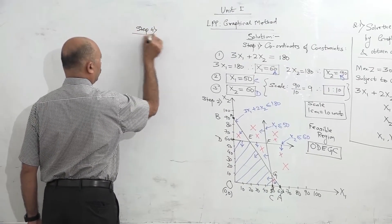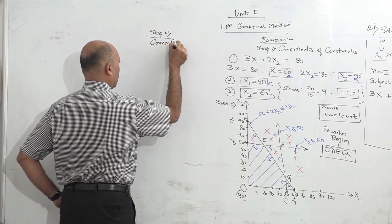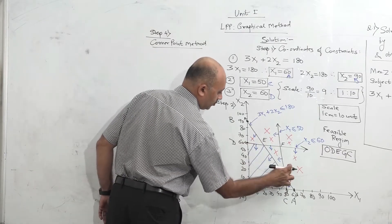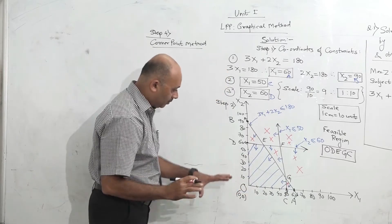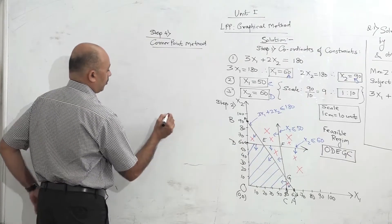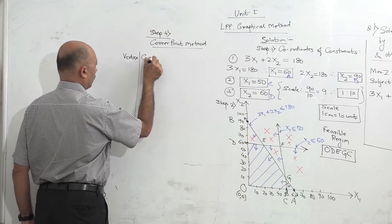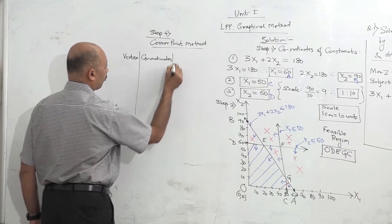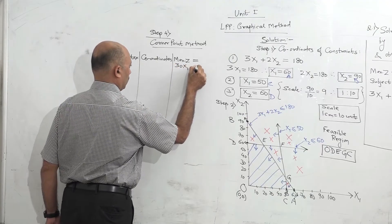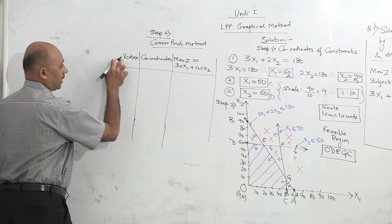Now we want to find the solution. For that we use a method called the corner point method. These are the corners of this feasible region — O, D, E, G, and C are the corners of the feasible region. Our optimal solution will be at one of these corners. So that is what we want to find out — we will use the corner point method.